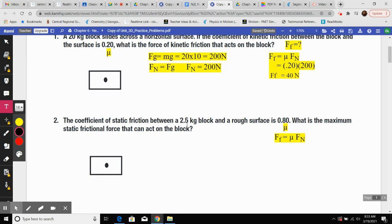2.5 kilograms times 10, 25. 25 Newtons is my weight, which is my normal force. So I'm doing 25 times 0.8 to get my friction force.